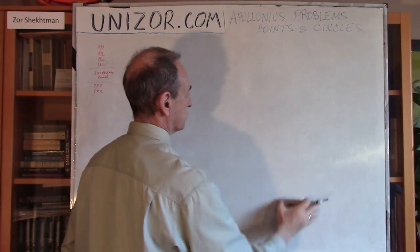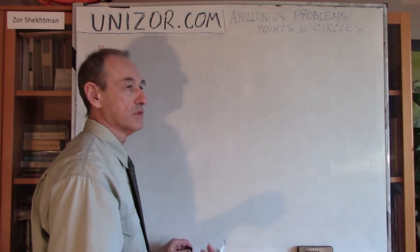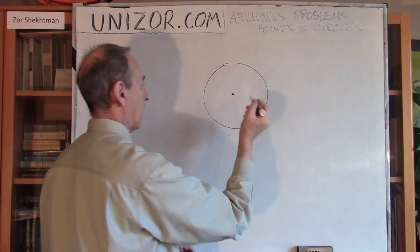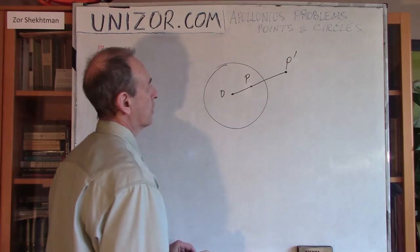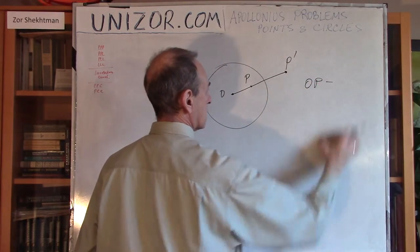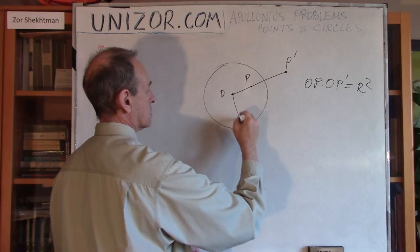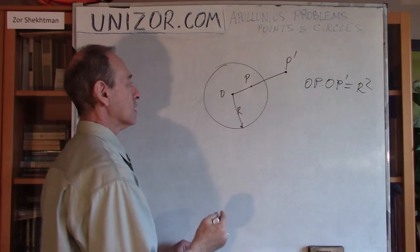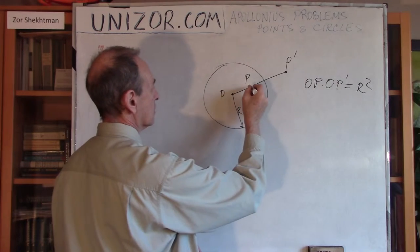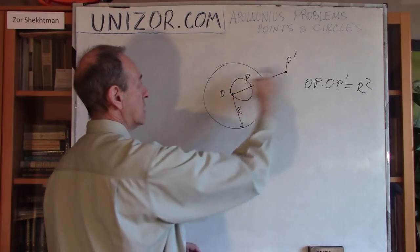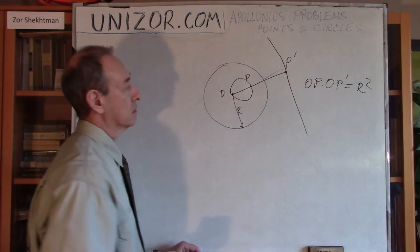These are simple problems — inversion is not involved, only lines and points are given. Then I introduced the concept of inversion. After the definition: given a point P and center O, you find OP-prime such that OP times OP-prime equals R squared, where R is the radius of the inversion circle. Importantly, if you have a circle passing through the center of inversion, its image is a straight line perpendicular to the diameter of that circle — we have proven that.